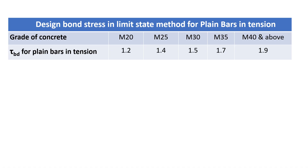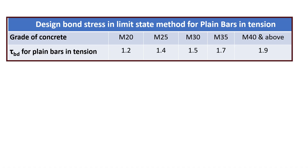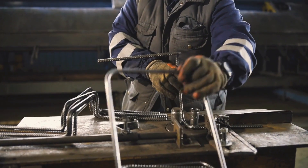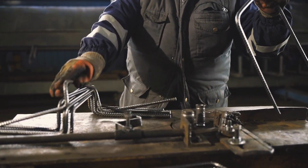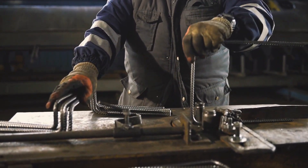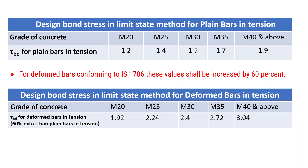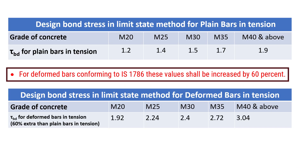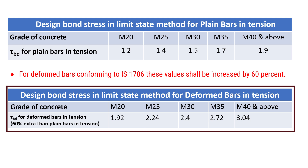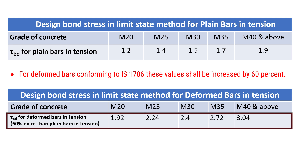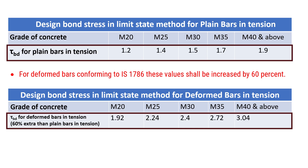Here is the catch: while our calculations are based on plain bars, in real-world applications we often use deformed bars. For these, the values need to be increased by 60%. Therefore, according to IS 456-2000, for deformed bars conforming to IS 1786, these values shall be increased by 60%. I have created a table showing the values of Tau_BD for deformed bars in tension, which shall be 60% extra than plain bars in tension.